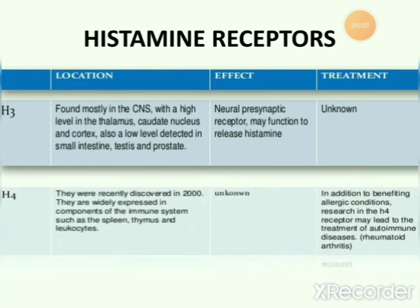H4 receptors were recently discovered in 2000 and are widely expressed in components of the immune system such as the spleen, thymus, and leukocytes. Their effect is not fully known, but research on H4 receptors may lead to treatments for allergic conditions and autoimmune diseases.